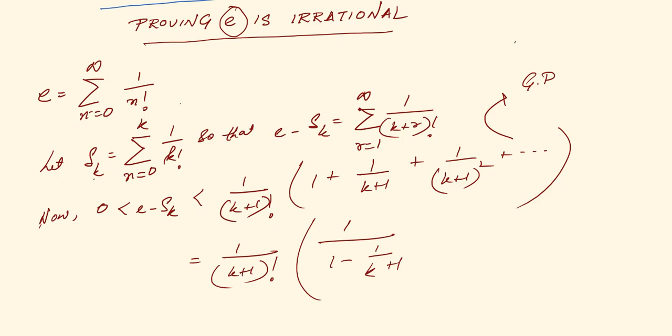By the formula a by 1 minus r we have that this reduces to 1 by 1 minus 1 by k plus 1, and this is in fact equal to 1 by k factorial into k plus 1 by k. This is equation 1.